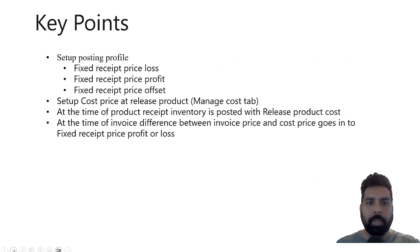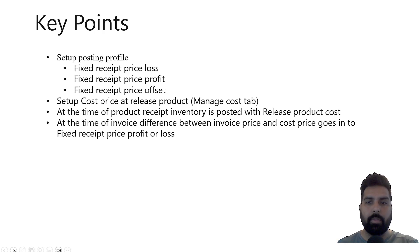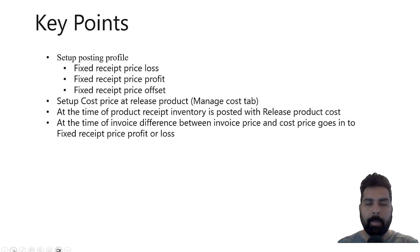Key points: you need to set up a posting profile with fixed receipt price loss and profit accounts. It is similar to your purchase price variance in standard cost, or the same as your inventory profit and loss account in the inventory tab. You need to set up a cost price — it is very critical for this feature to work. At the time of product receipt, inventory is posted based on the price defined on the released product, not the price on the purchase order. At the time of invoice, the variance gets posted to the fixed receipt price profit or loss account using the offset.